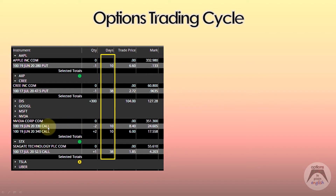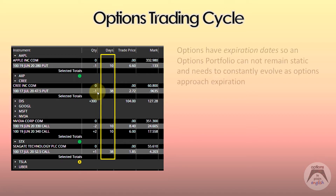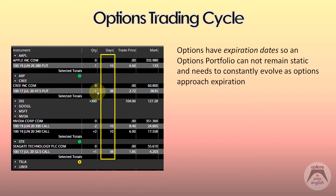For example, in 10 days, once these go away, you're not going to have anything for NVIDIA in this particular case. So something needs to happen to these components, and how you deal with them is something you need to determine yourself. Options have expiration dates, so an options portfolio cannot remain static and needs to constantly evolve as options approach expiration.